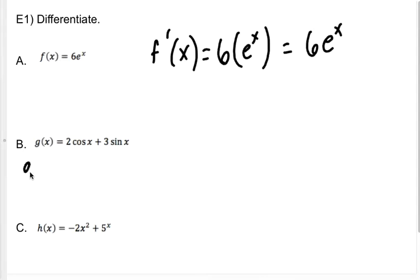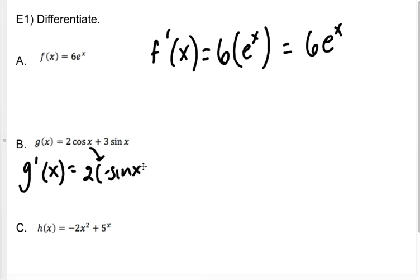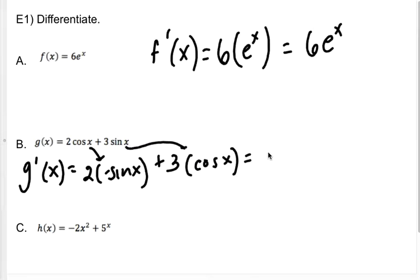For my g prime of x, I have a 2 in front, and I'm going to differentiate cosine. When I do that, I get negative sine, plus a 3 times the derivative of sine, which is regular cosine. So my answer is going to be negative 2 sine of x plus 3 cosine of x.